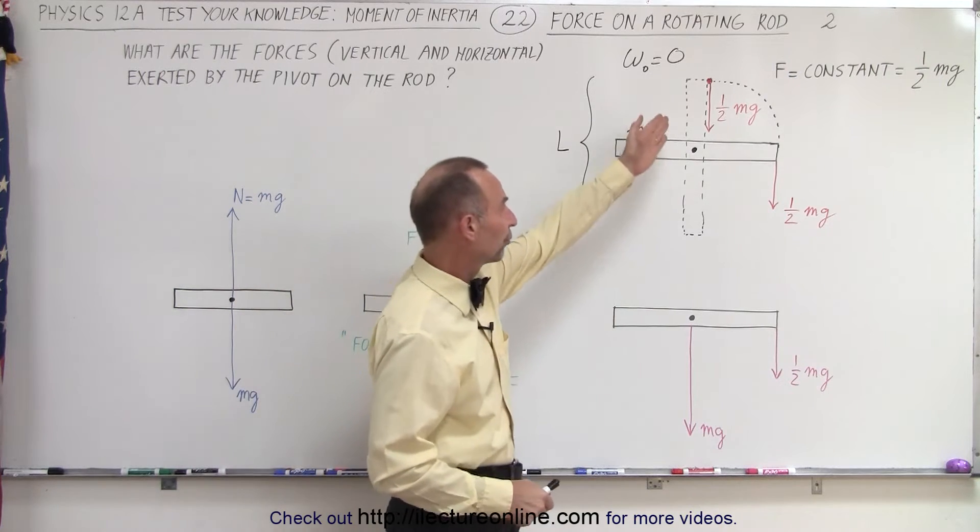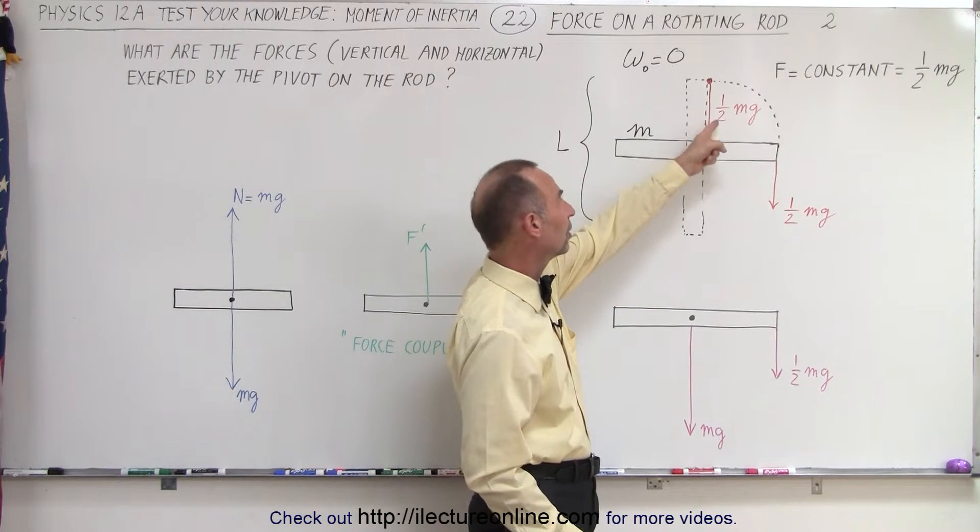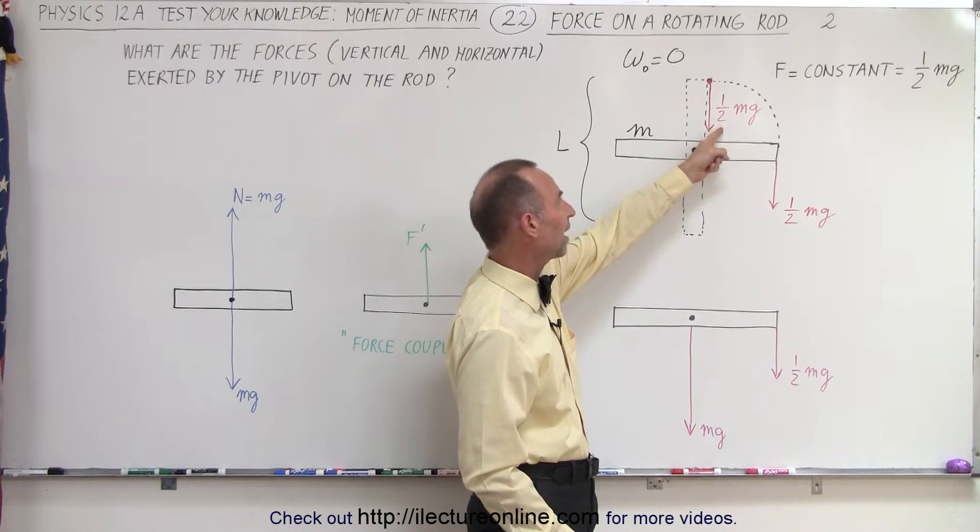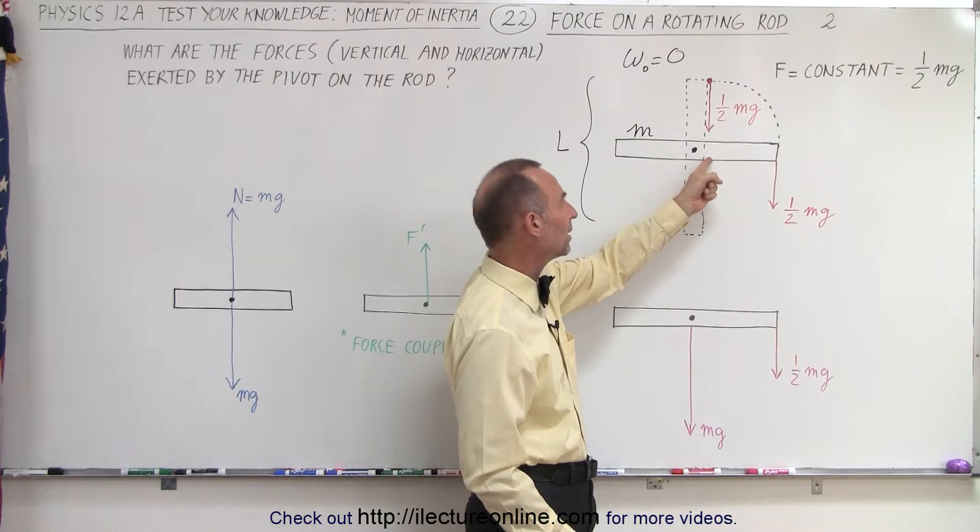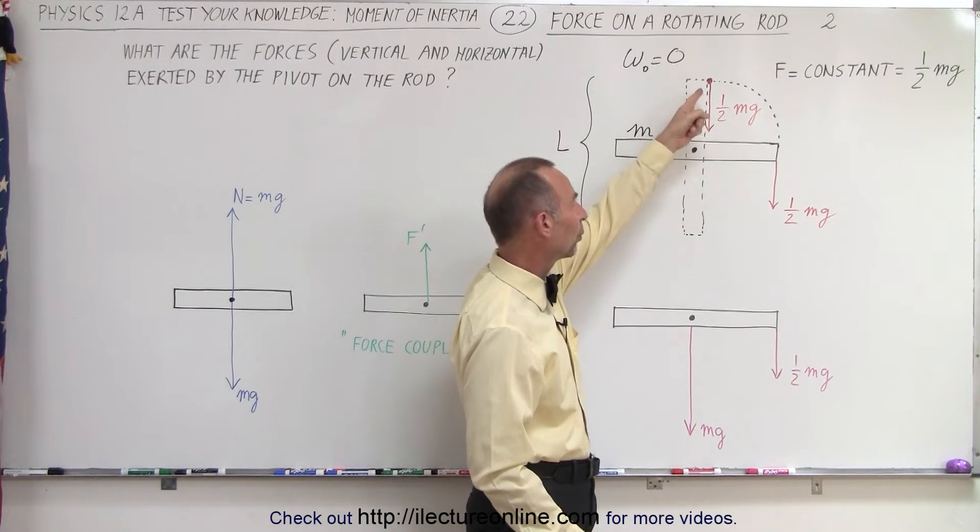We had a rod which was first vertical, and then we had a continuous force, or a constant force, of a half mg, half times the weight of the rod, pulling on one corner.